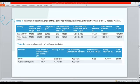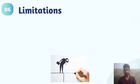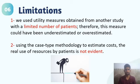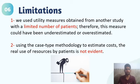My name is Yusuf, a PhD student at the College of Pharmacy, University of Baghdad. I will talk about limitations. First, utility measures (QALYs) were obtained from another study with a limited number of patients; therefore, these measures could have been underestimated or overestimated.